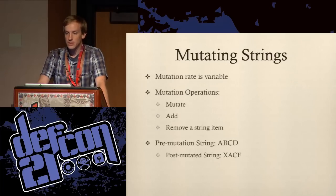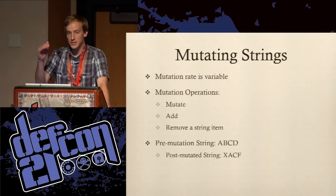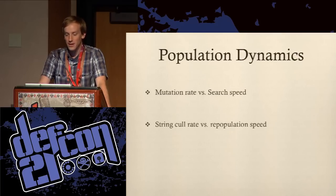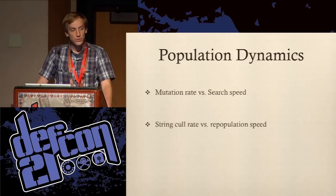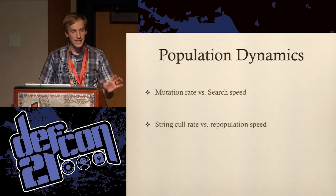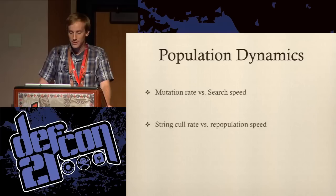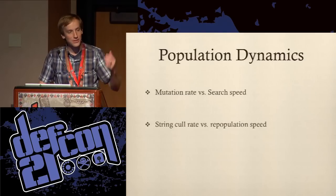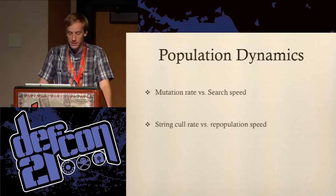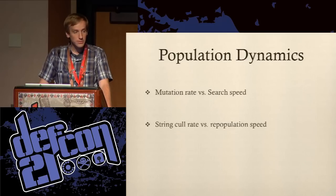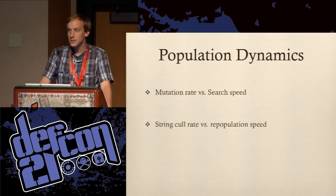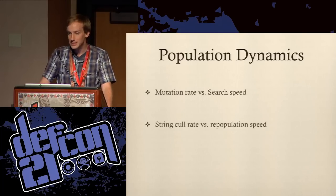There are a couple of things to keep in mind as we go through this algorithmic process of breeding and killing. Our population will vary. The mutation rate versus surge speed is very important — if we mutate too quickly, changing every single attack string, it's essentially throwing random data at the web server and is not efficient. It has to be tuned to a point where it is efficient search. There's also the string cull rate versus repopulation speed: if you cull more than you breed, the population decreases, and vice versa. If you repopulate too quickly, they'll denial-of-service your own machine.